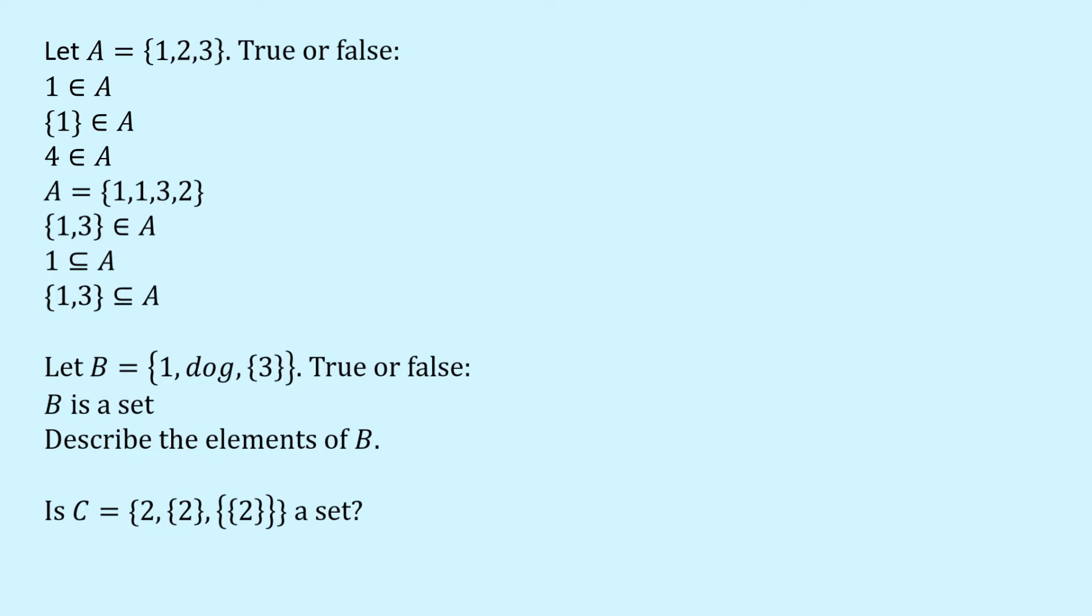Up here we're given an expression for A and this is a set. The curly brackets indicate that it's a set and it contains a number of elements, maybe a finite number, maybe an infinite number of elements. In this case A contains three elements, and these three elements are the numbers 1, 2 and 3.